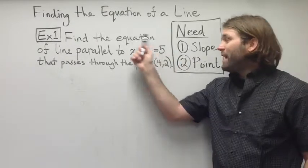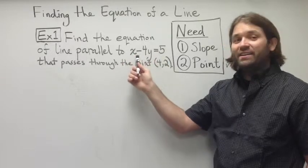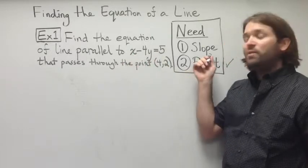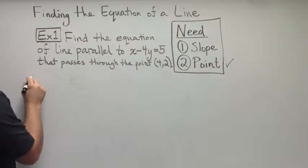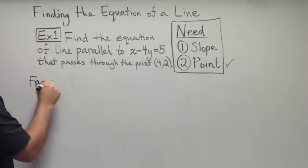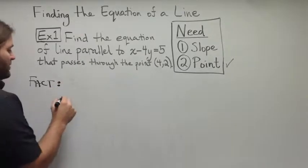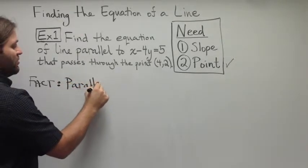So, if we can find the slope of this line, then we can find the slope of the line that we want. This is due to a fact about parallel lines. Parallel lines have the same slope.